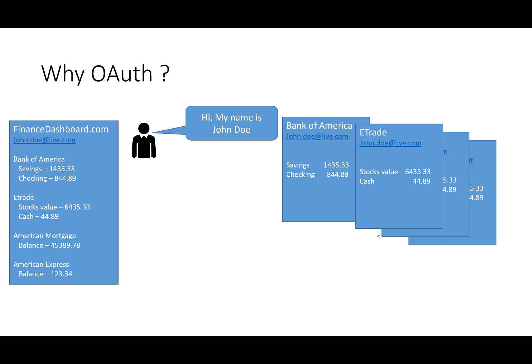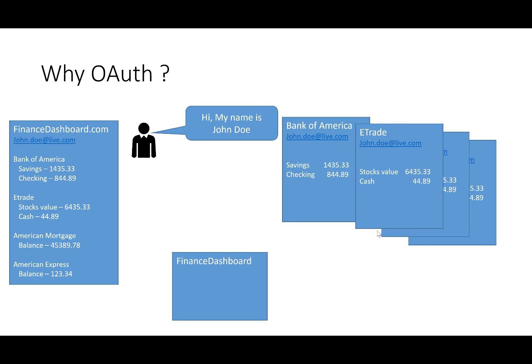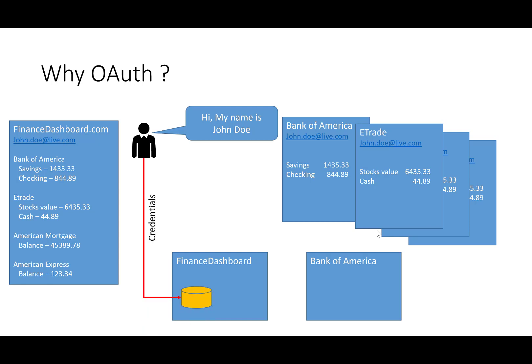FinanceDashboard needs to retrieve the statement balances from Bank of America, E-Trade, and so on. One way of accomplishing this is for John Doe to provide his credentials to FinanceDashboard. FinanceDashboard, in turn, makes a call to Bank of America with the credentials, and Bank of America can then give the statement balance to FinanceDashboard to be displayed on the dashboard.